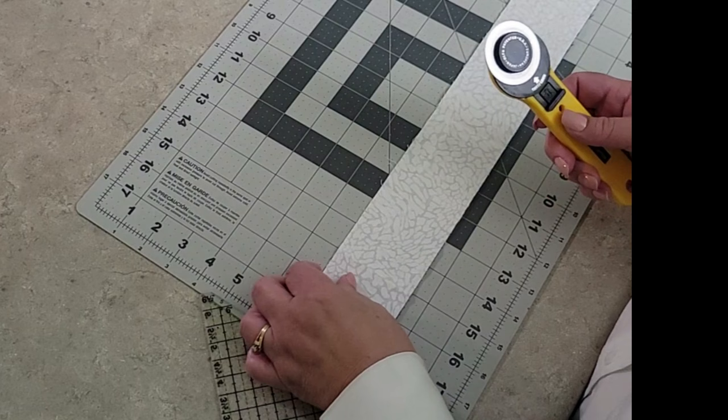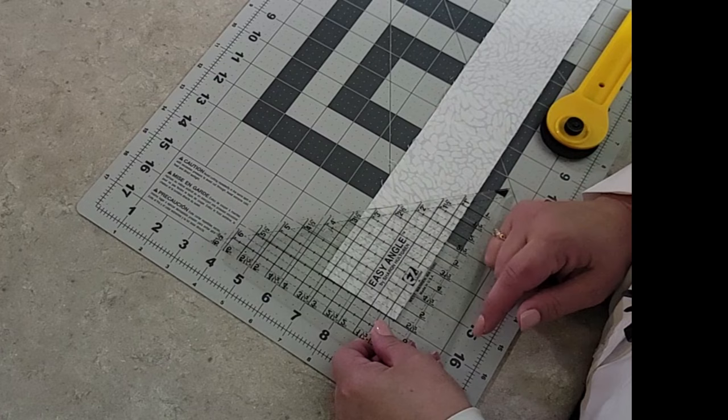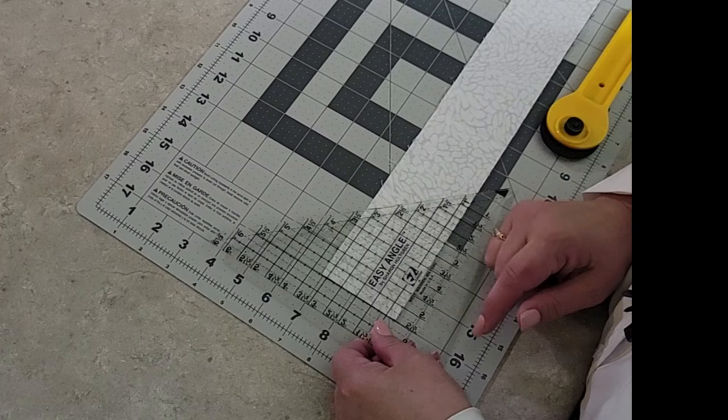Now we begin. When we go to use the easy angle, we start by looking at it and making sure literally that we can read the words 'easy angle.' If you can read them, you've got the ruler going in the right direction. Now we take the easy angle. I remember that I cut my strip at two and a half inches.